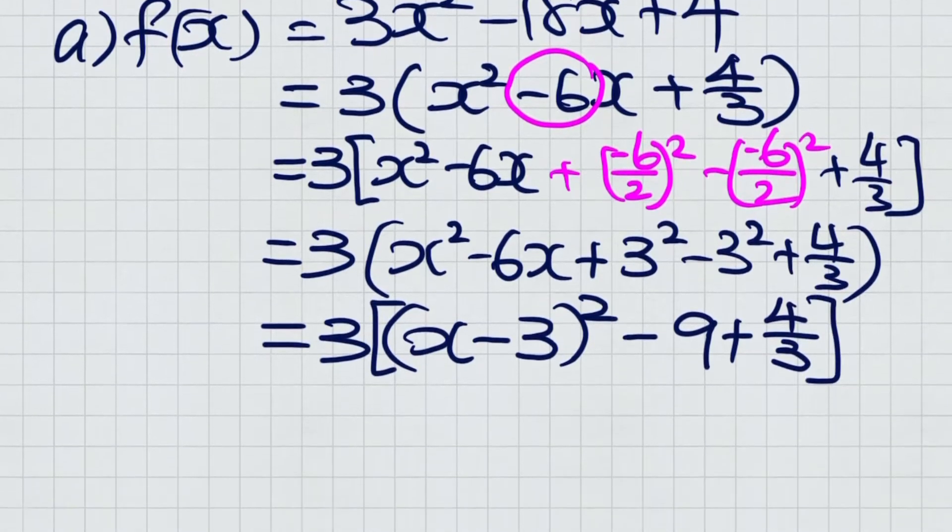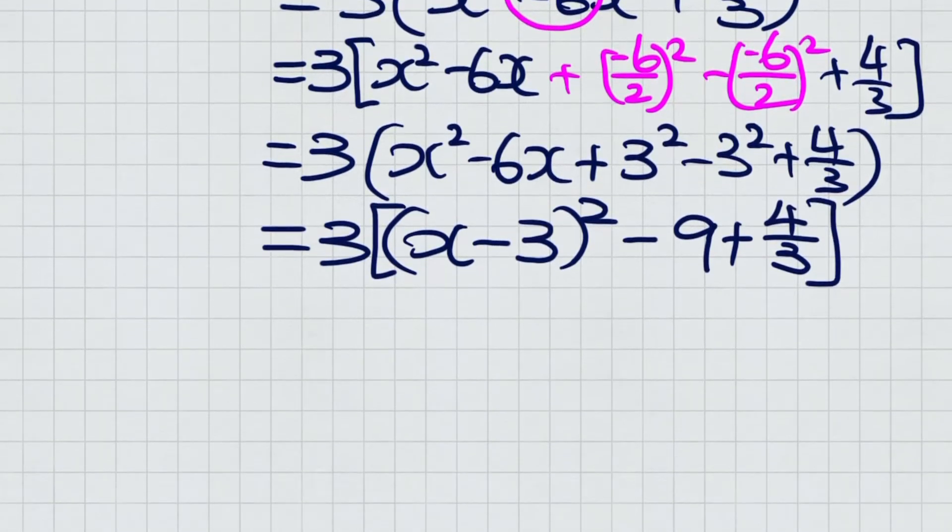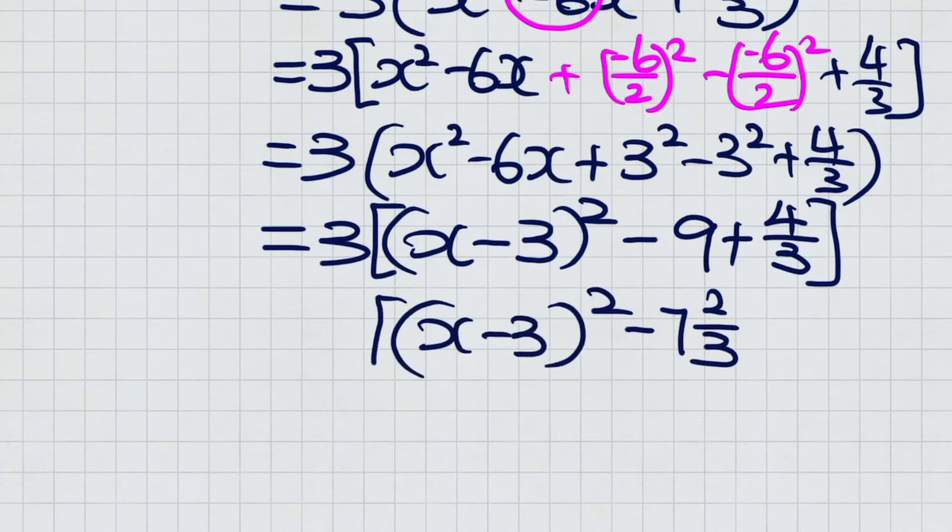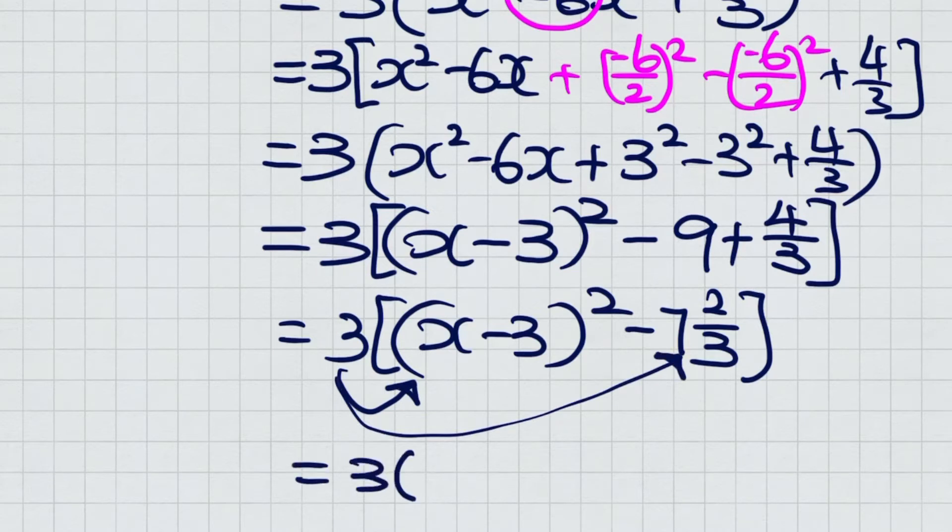Evaluate: 3 squared becomes 9. Keep the 3 out. 4/3 minus 9, we should get -23/3 here. Copy down the rest. Multiply 3 to these two terms and you should get 3(x - 3)² - 23. That's the answer.